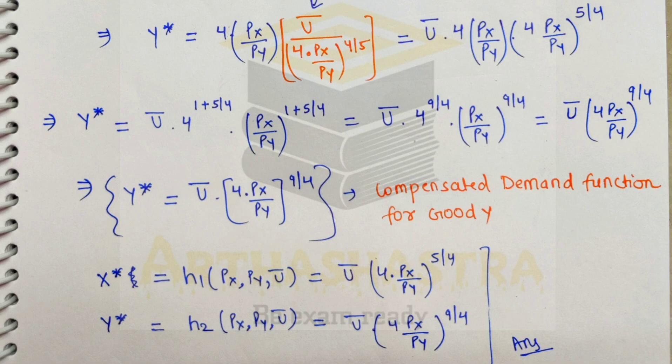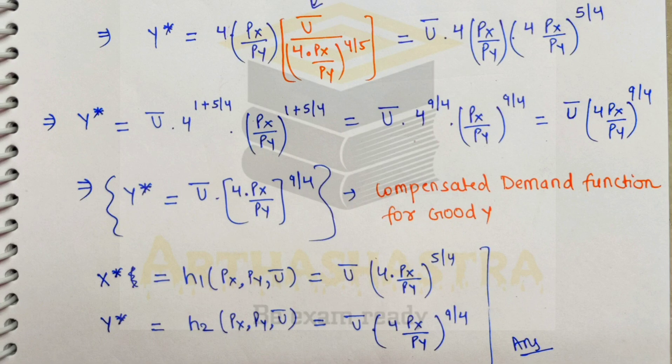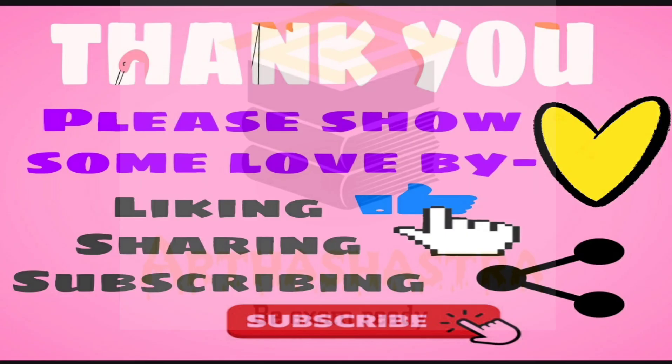We represent the compensated demand functions as: h1(px, py, ū) = ū × [4·(px/py)]^(5/4) for good x, and h2(px, py, ū) = ū × [4·(px/py)]^(9/4) for good y. This is our solution for the requested question. I hope you find this video helpful — please subscribe to the channel and share it with your friends.